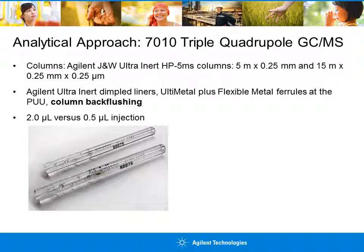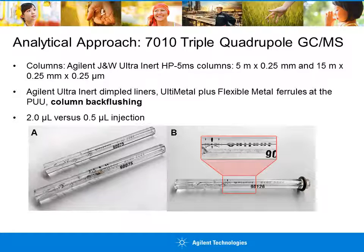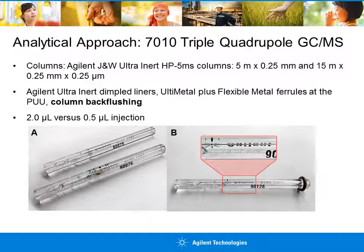The slide shows two GC inlet liners with different sample volumes injected over the course of a sequence. Liner A (lower left) had a greater amount of sample injected — 2.0 microliters over 65 injections — and clearly contains increased deposits, which shortens the usable lifetime of the liner and adds additional maintenance costs. Liner B (right) had reduced sample volume injected — 0.5 microliters — but over 200+ injections. As you can see, it is almost free of visible deposits, shown clearly in the magnified view, which prolongs performance and decreases maintenance costs.